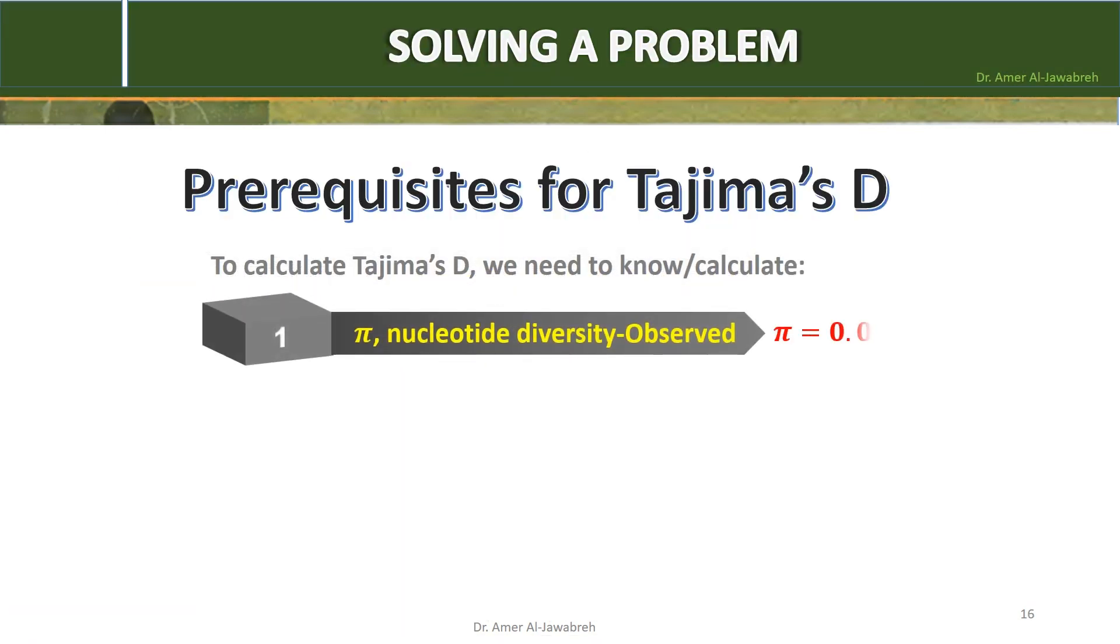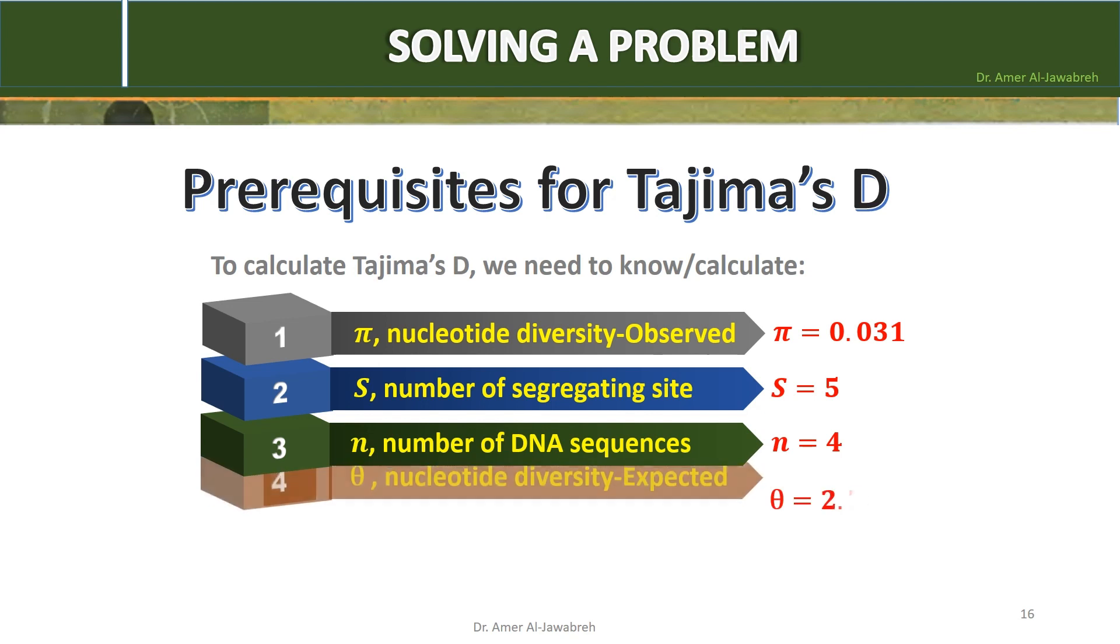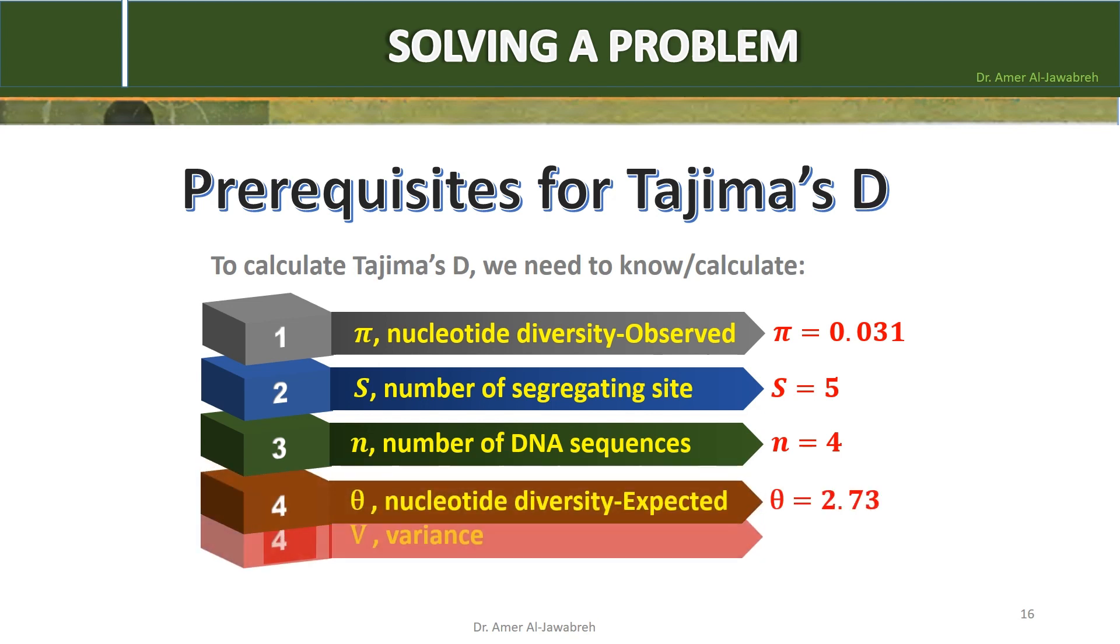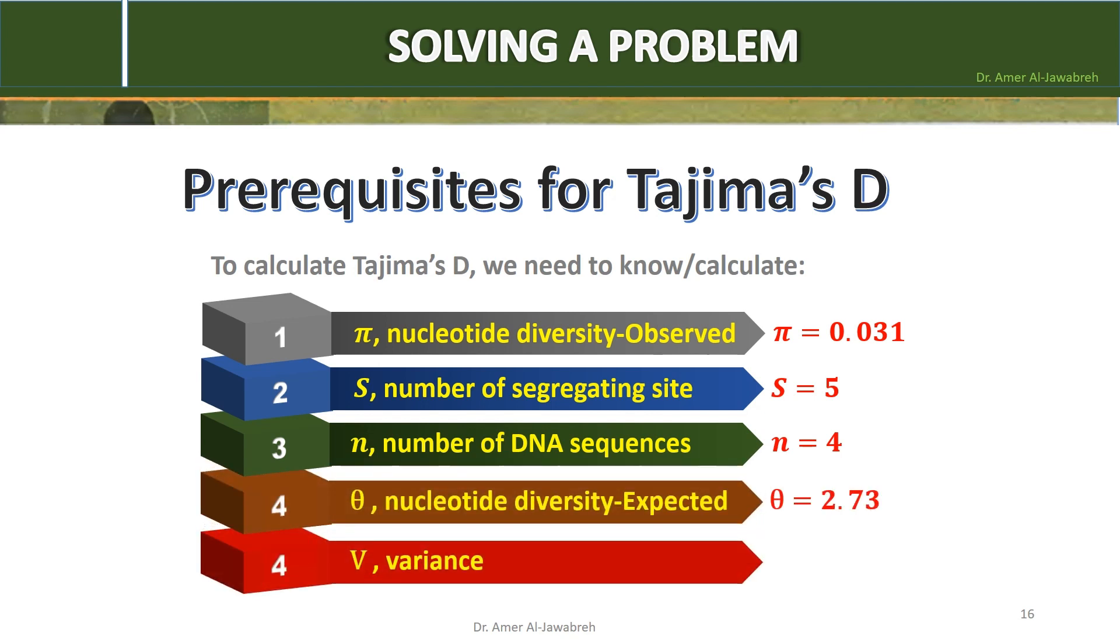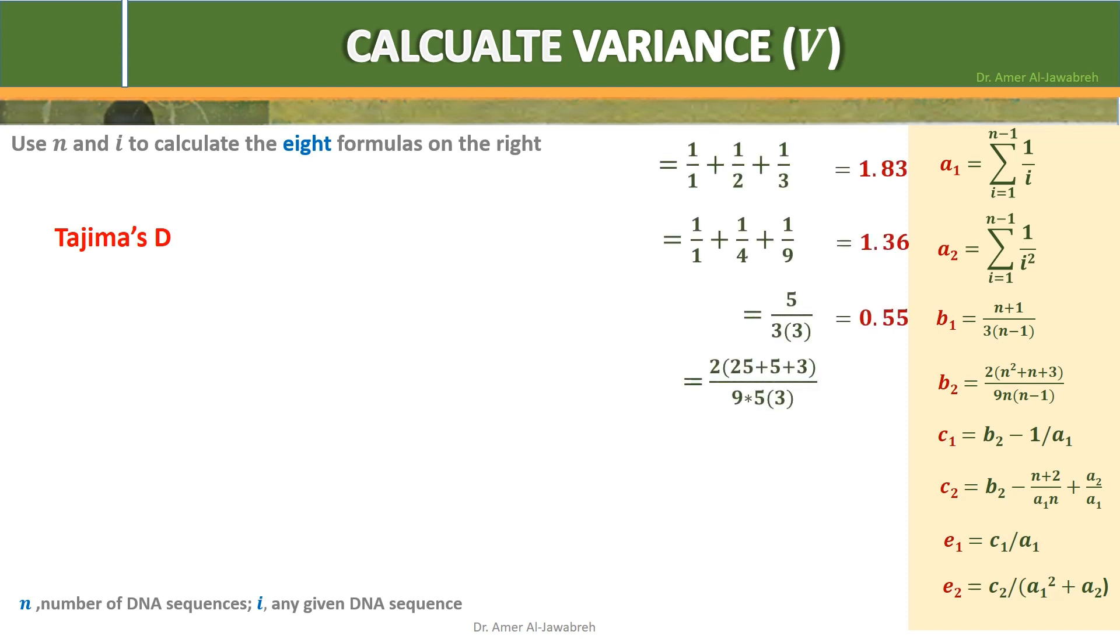Pi equals 0.031, S equals 5, N equals 4, theta equals 2.73. Now let's calculate V variance. Calculate variance V. Use N and I to calculate the 8 formulas on the right, where N is the number of sequences and I is any given sequence.